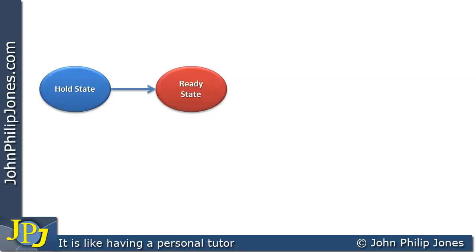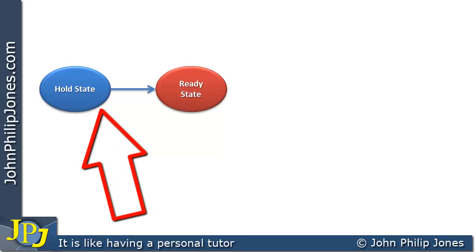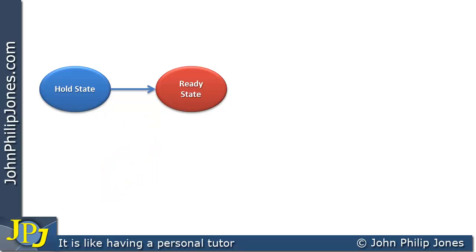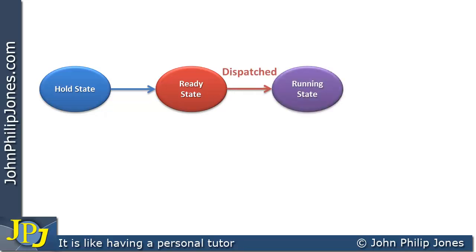To summarise this video, we've looked at a job, a process, the hold state, and how things are admitted to the ready state. We've considered the process control blocks and their fields. The next video will carry on with this diagram and look at what happens when we dispatch a process from the ready state to the running state, as well as all the other states that an individual process can be in.